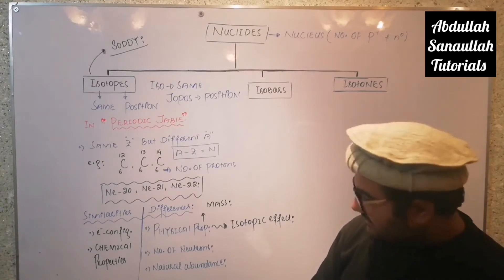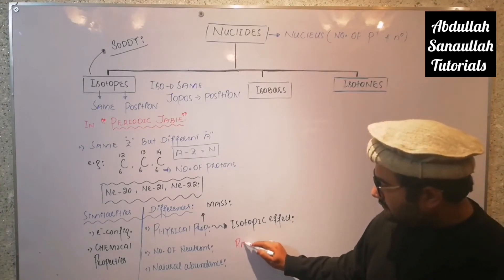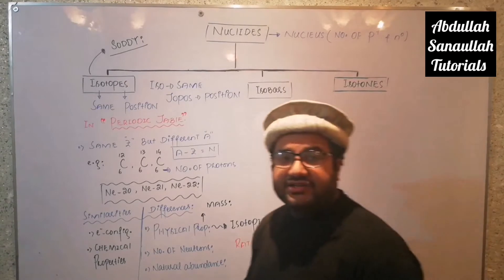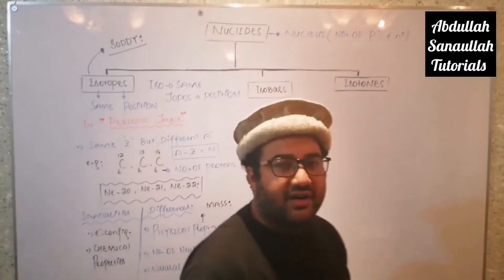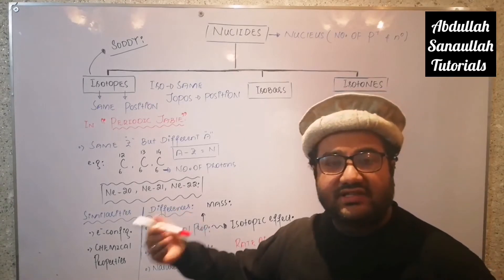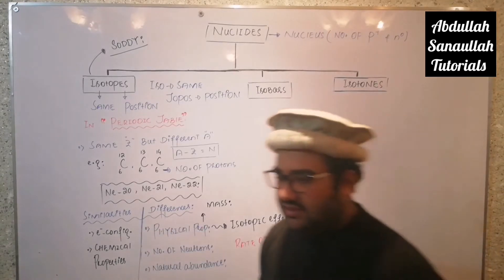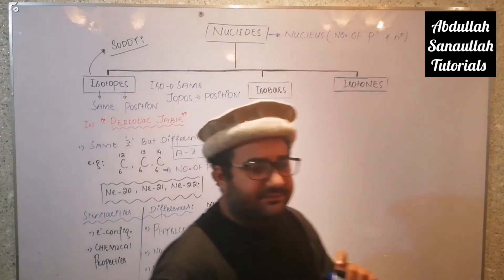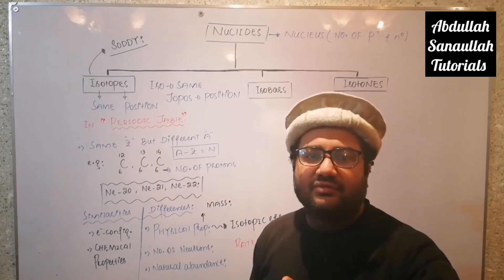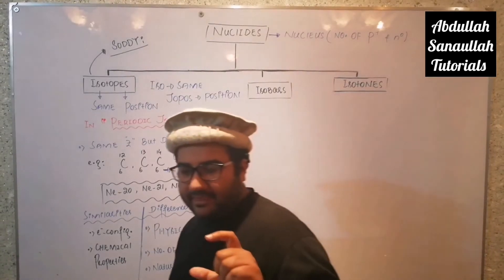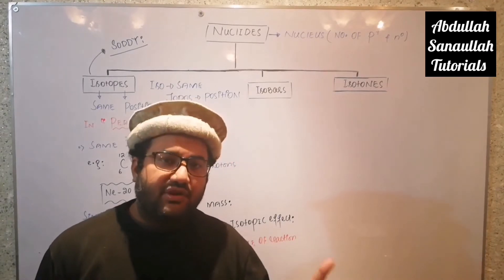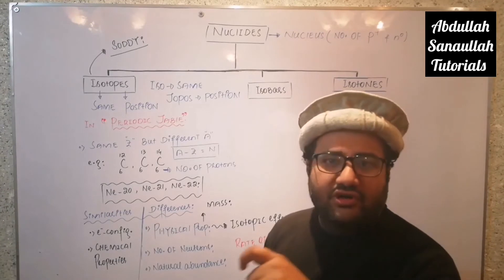Another important difference is the rate of reaction — the rate of reaction of isotopes is also different. For example, in the case of hydrogen, there are three isotopes: protium, deuterium, and tritium. The reactions of deuterium are much faster compared to protium. Natural abundance is important because when we discuss an isotope, we discuss the properties of the isotope with maximum natural abundance. That is why hydrogen is usually discussed in its protium form.